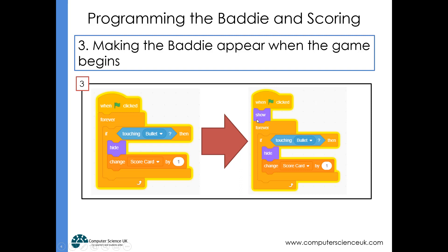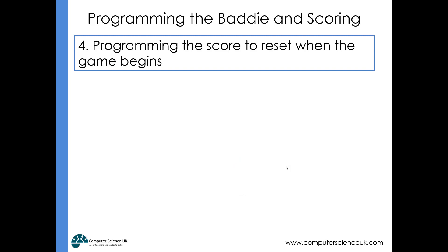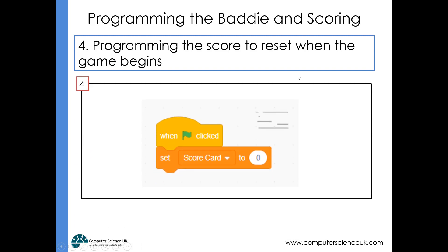When the green flag is clicked, the baddie shows at the start of every game, then constantly checks if it's been hit by the bullet. If it is, the baddie hides and the score changes by one. To reset the score when the game begins, add a script: when green flag is clicked, set scorecard to zero.